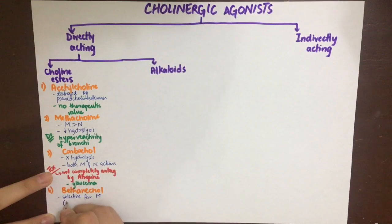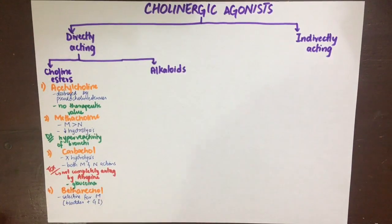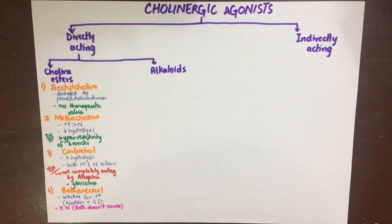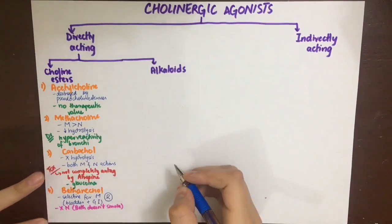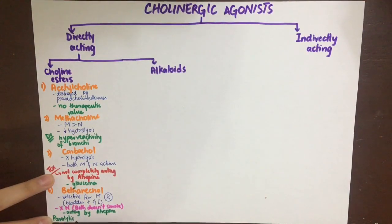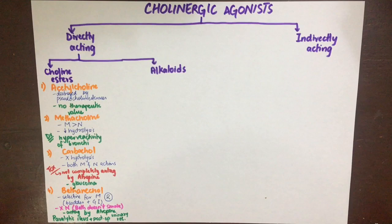The next choline ester is bethanechol. Bethanechol has major selective muscarinic actions on the bladder and the GIT. It does not act on nicotinic receptors — it can be remembered by the fact that 'Beth doesn't like nicotine.' It is resistant to both anticholinesterases, just like carbachol, and is mainly used in post-operative paralytic ileus and urinary retention. In case of toxicity, its muscarinic actions can be completely antagonized by atropine.